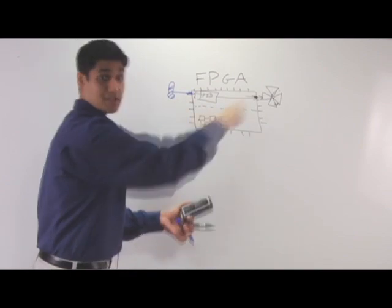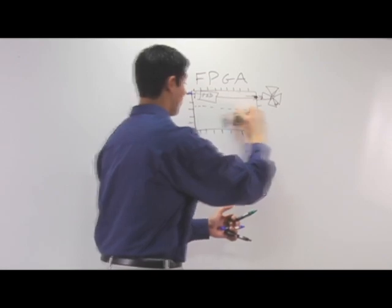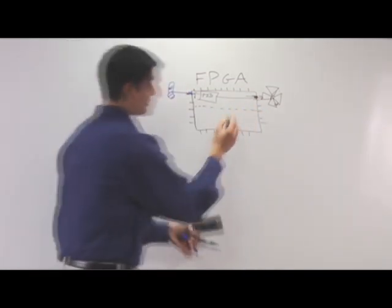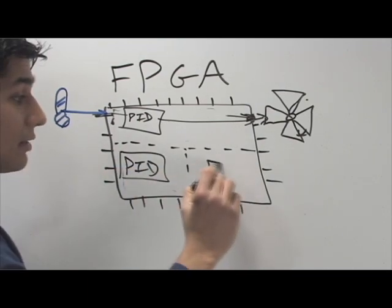Well, that control loop speed is very important. And if I wanted to do multiple control loops, I could dedicate different parts of the FPGA chip and section those off as well. So I can have multiple PID loops running truly in parallel.